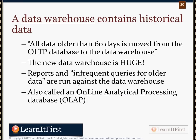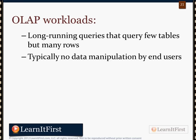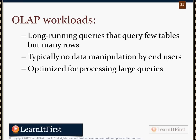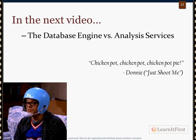This is called OLAP — Online Analytical Processing. We use our older data for analytics: comparing sales over the past 10 quarters, analyzing trends, making predictions — all by examining the historical record. OLAP databases have a very different usage pattern: long-running queries, not many tables but perhaps trillions of rows, almost no data manipulation from end users — it's mostly read-only. It's optimized for large queries rather than short, speedy ones. Speed is not as critical here; we understand that reporting queries run longer than shopping queries. These are used for reporting and analytics.